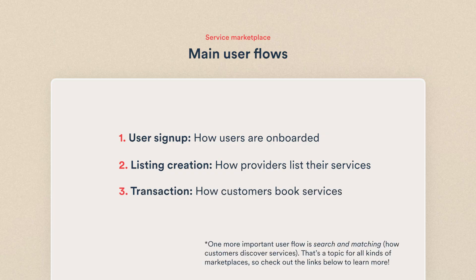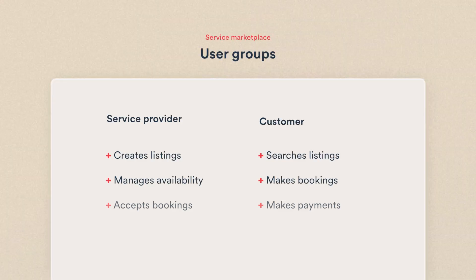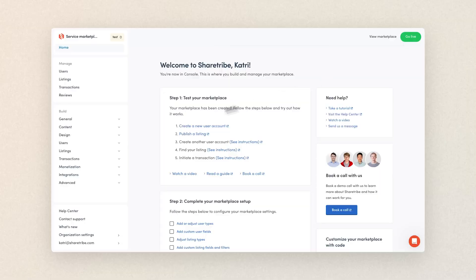Let's start with users. Service marketplaces typically have two distinct user groups: service providers and customers. These groups often have very different needs and user flows. That's where user types come in. You can create streamlined role-specific experiences for each group, so we should head over to our user type settings to do just that.